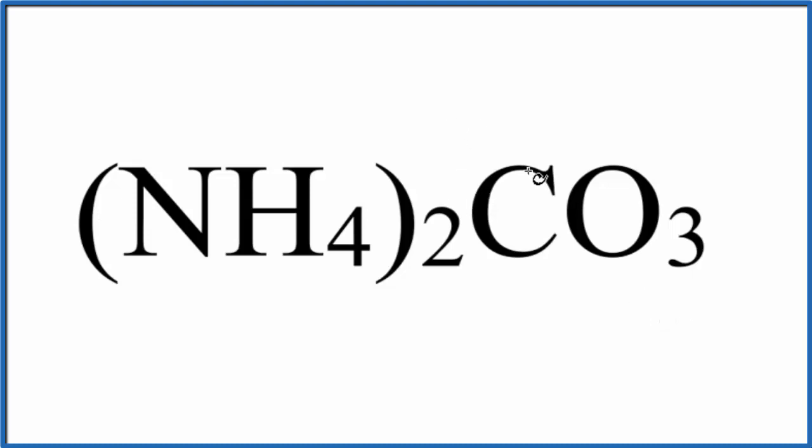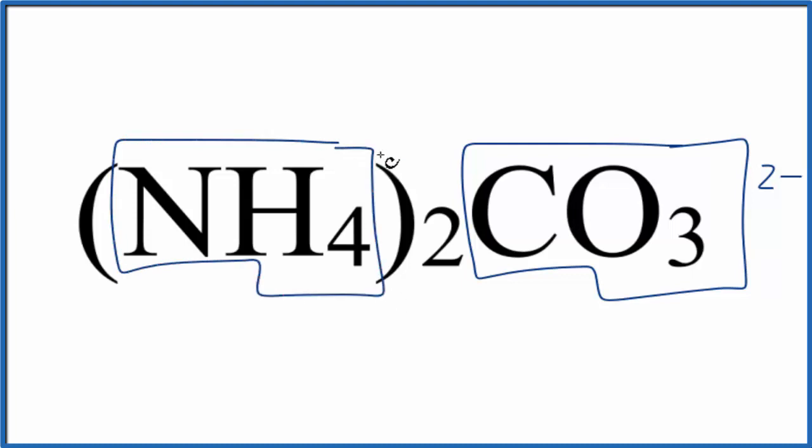To really understand that, you have to know your polyatomic ions. For example, CO3, that has a two minus charge. This is called the carbonate ion. And NH4, that's NH4+, that's the ammonium ion.